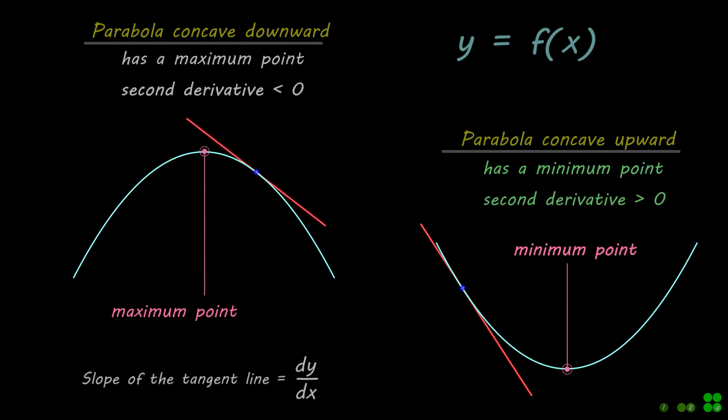For a quadratic function, the critical point is the vertex of the parabola where the first derivative is zero, which is the slope of the tangent line.